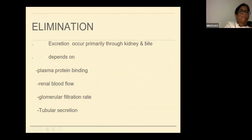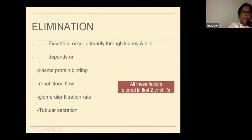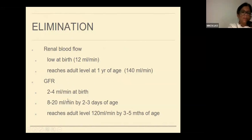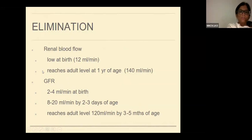Excretion occurs primarily via the kidney and bile, and depends upon plasma protein binding, renal blood flow, glomerular filtration rate, and tubular secretion. All these factors are still developing in the first 2 years of life. Renal blood flow is low at birth — around 12 ml per minute — and reaches the adult level by 1 year of age. Similarly, GFR is around 2 to 4 ml per minute at birth, increases to 8 to 20 by 2 to 3 days, and reaches the adult level of 120 ml per minute by 3 to 5 months of age.